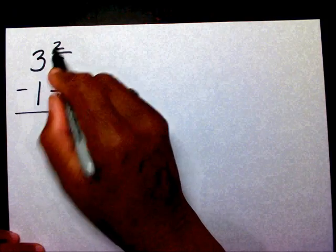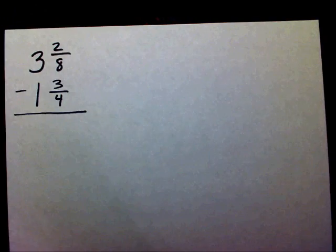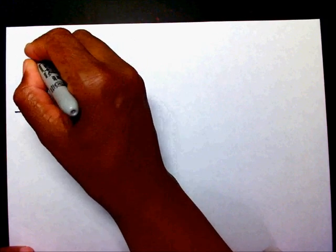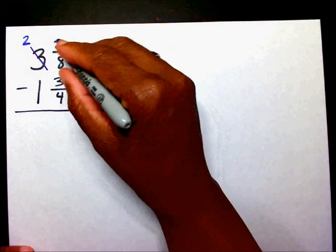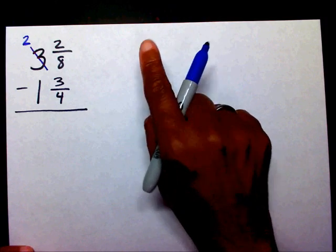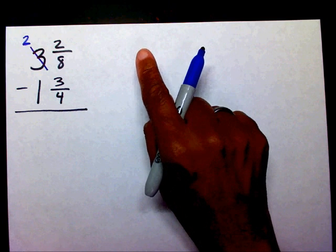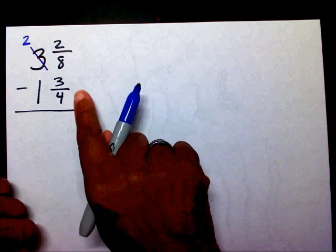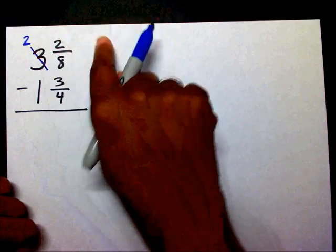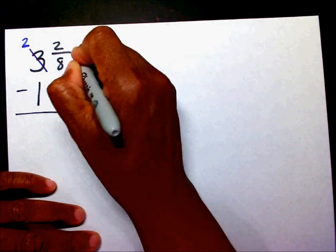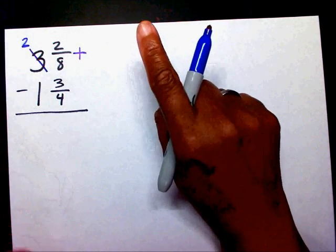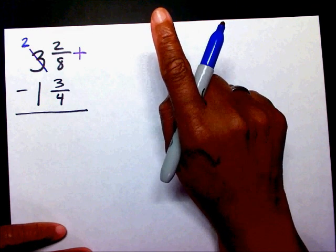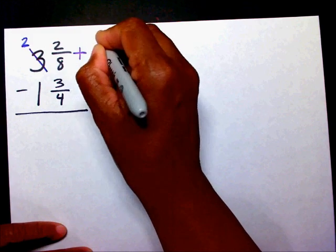Right now I can't subtract two minus three, so I need to go over here and borrow one. Put a stripe through the three — the three will become a two — and that leaves me with one hanging out here. I can't put it down here; I need to leave the one in the top. So I'm going to pick a one to add to this fraction, and the one I'm going to choose is eight over eight.